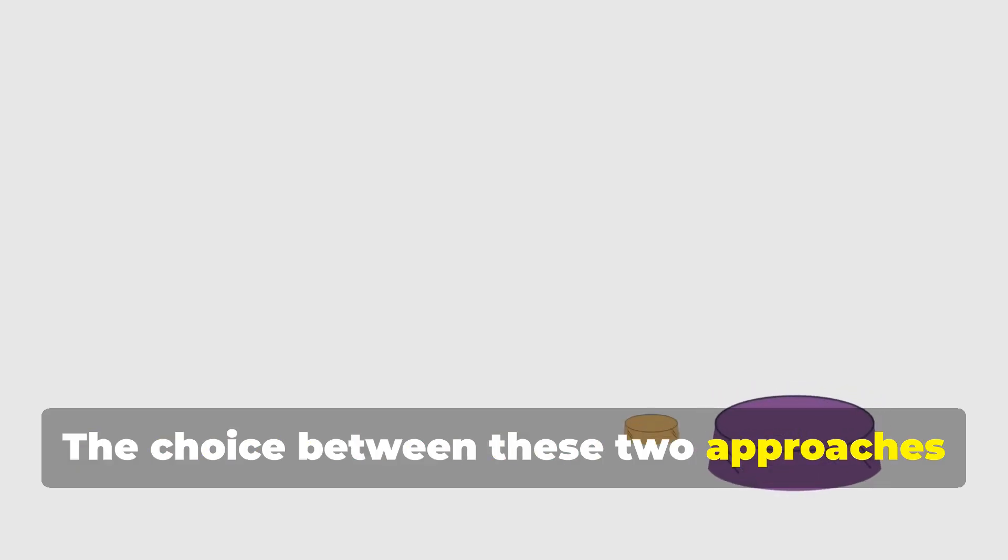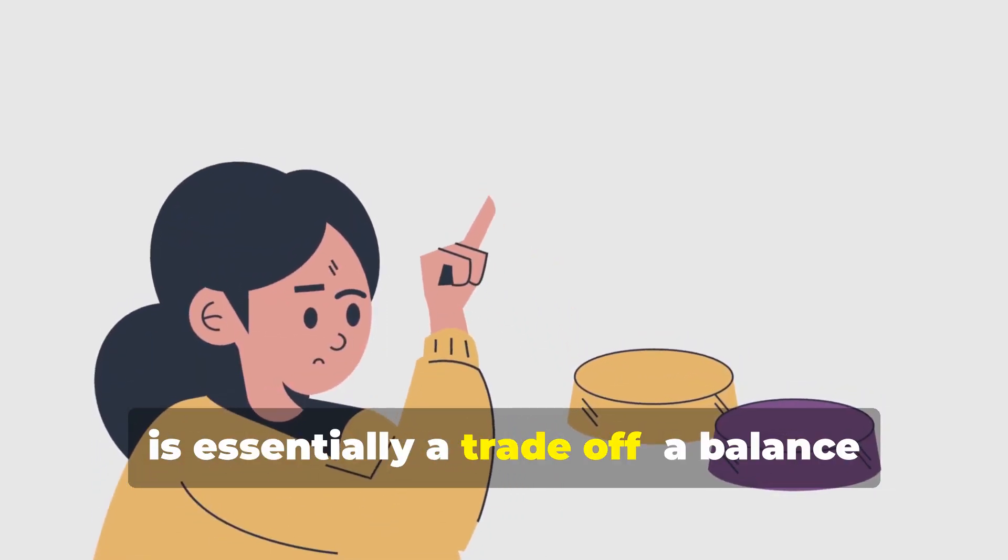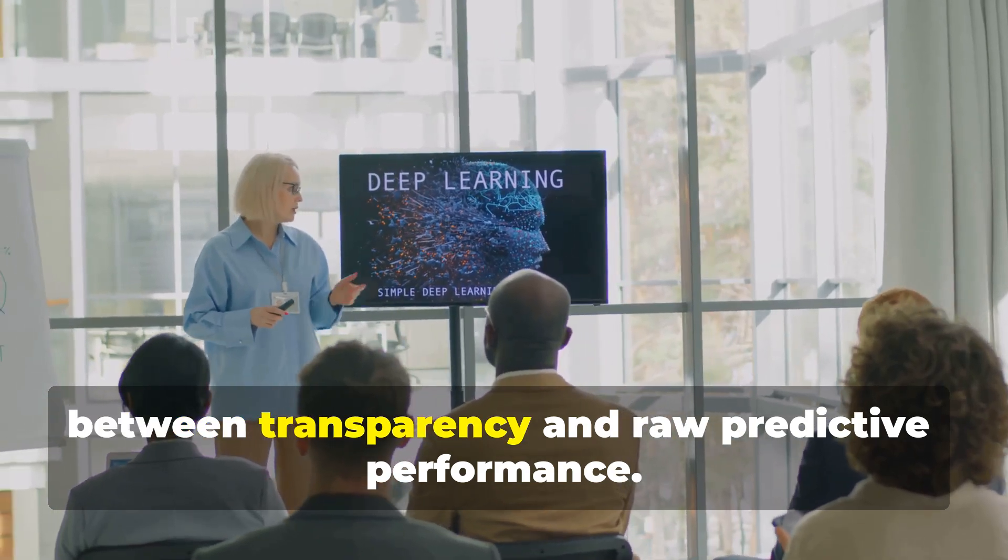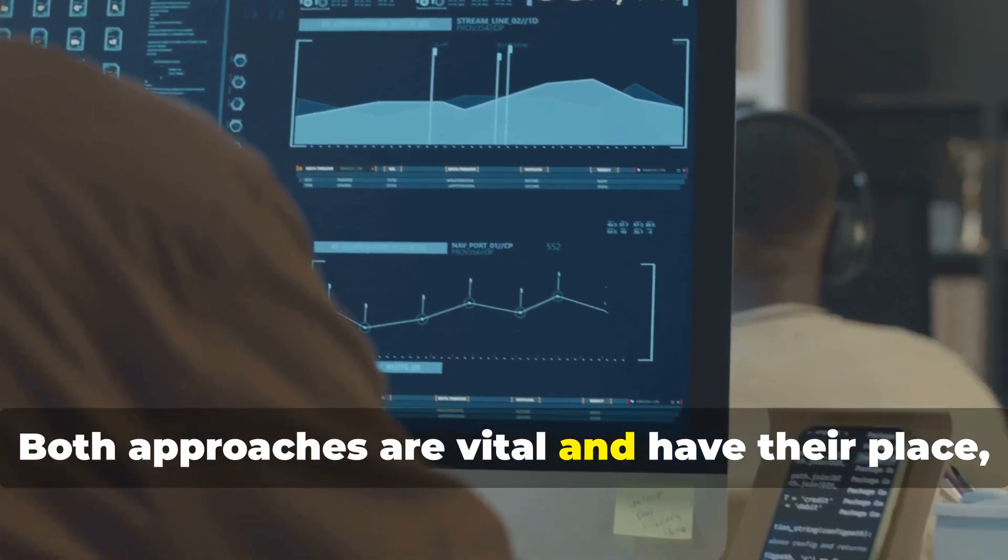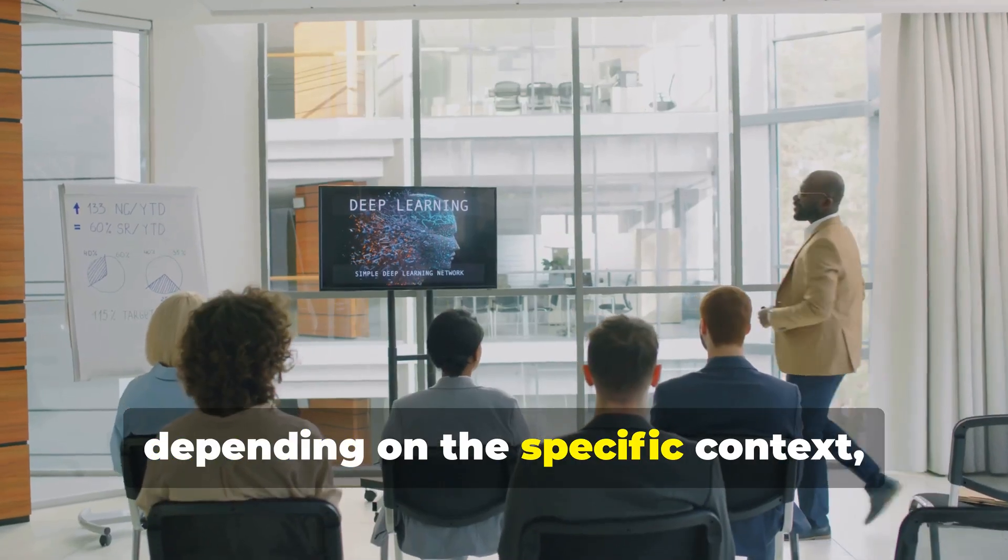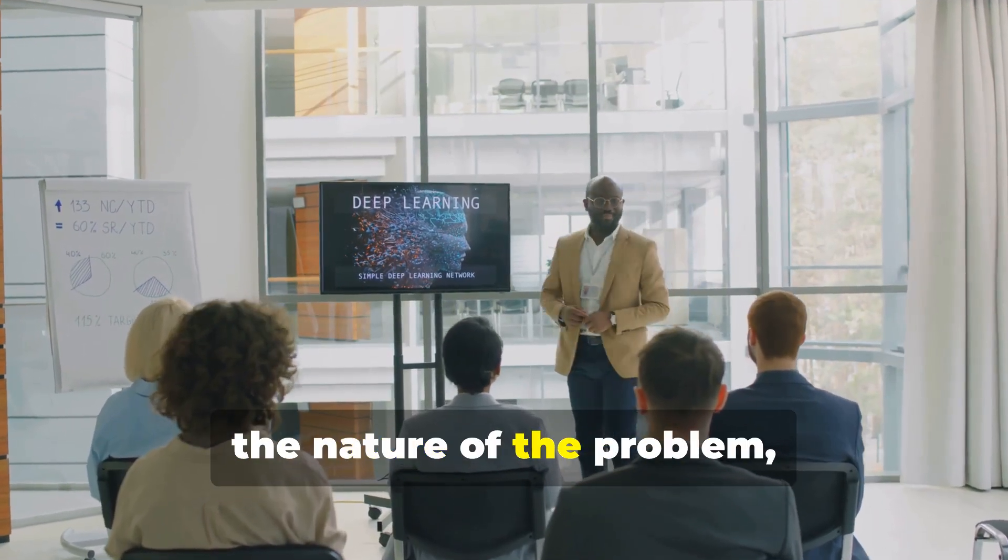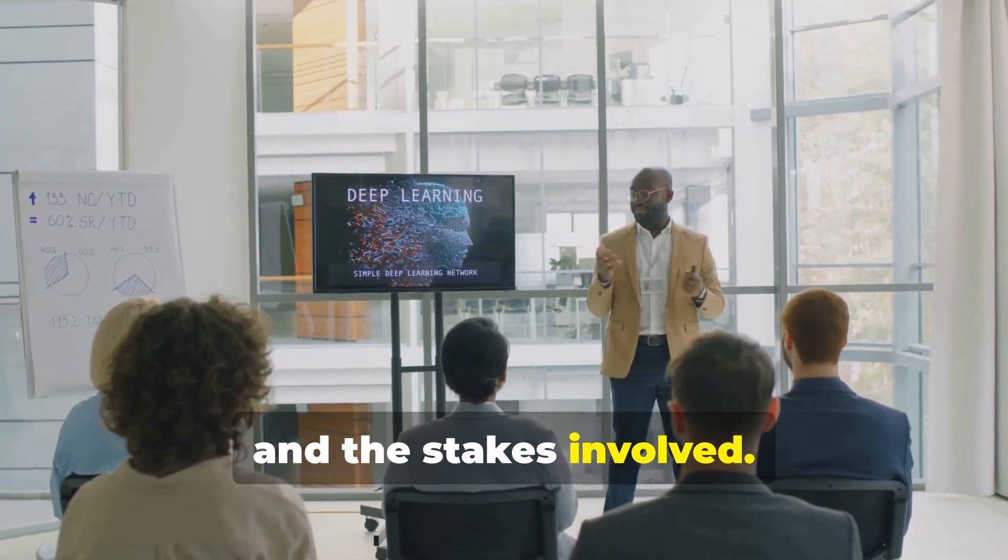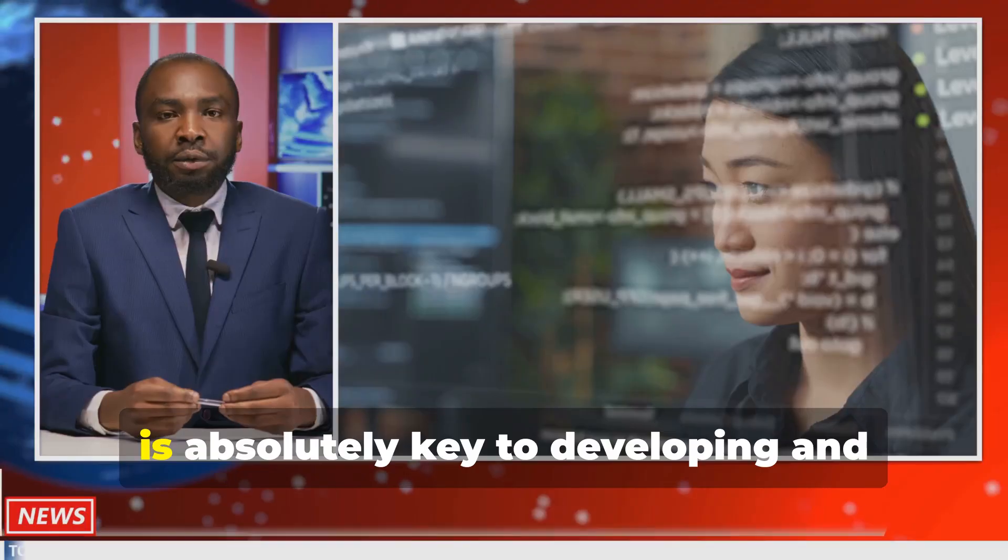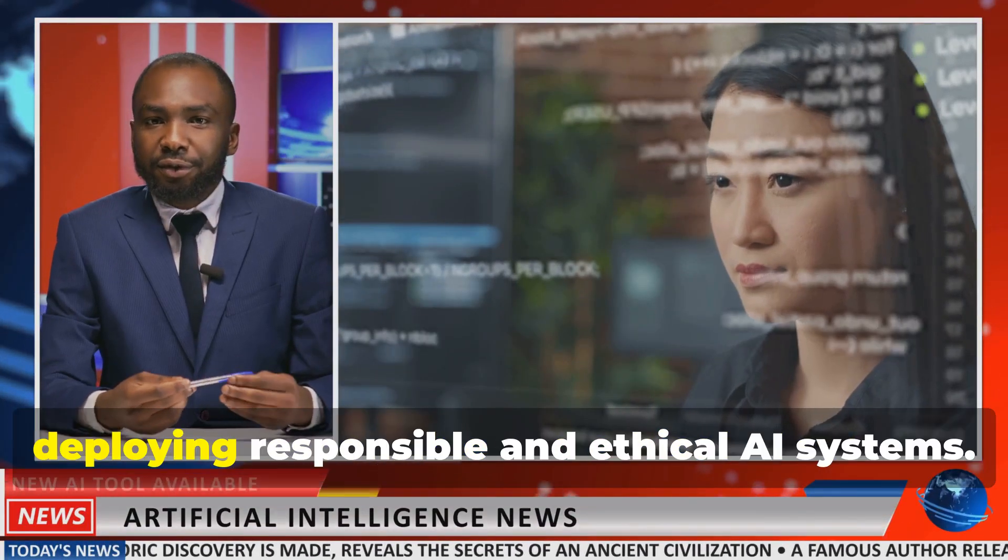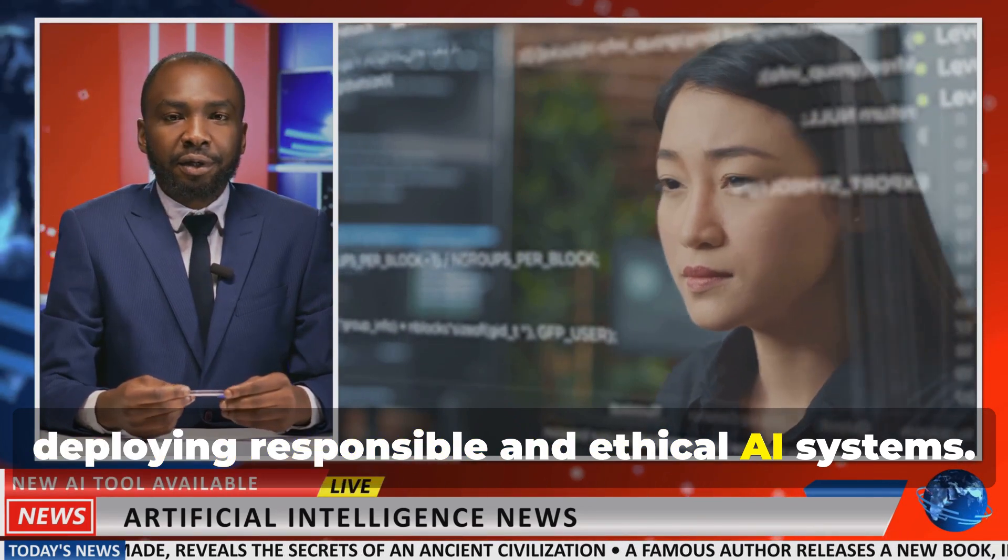The choice between these two approaches is essentially a trade-off, a balance between transparency and raw predictive performance. Both approaches are vital and have their place, depending on the specific context, the nature of the problem, and the stakes involved. Therefore, understanding when to use each approach is absolutely key to developing and deploying responsible and ethical AI systems.